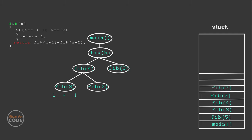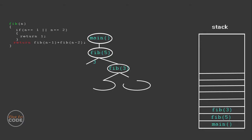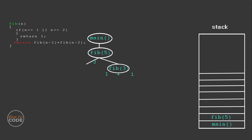After that, fib of 3 is popped out from the stack and returns 2 to the previous call. Now fib of 2 is popped out and the function is called with n value 2 — as per the base condition, fib of 2 returns 1. Now fib of 4 is popped out and returns 3 to the previous call. Then fib of 3 calls itself with values 2 and 1 — fib of 2 returns 1 and fib of 1 returns 1 — so fib of 3 is popped out and returns 2 to the previous call.